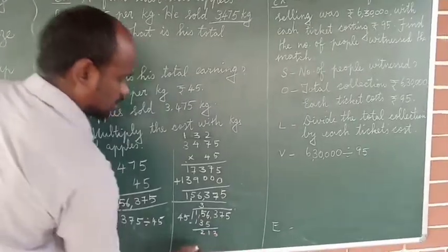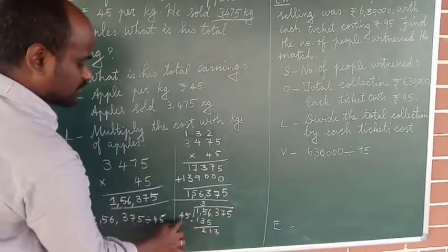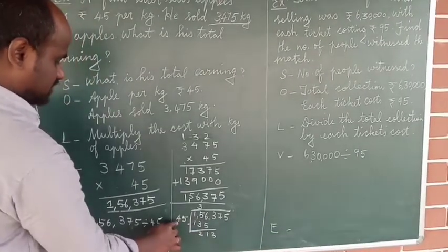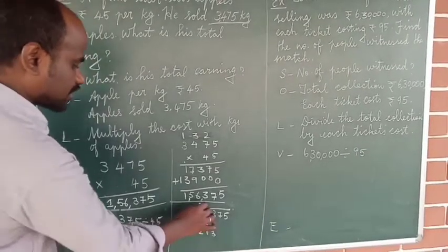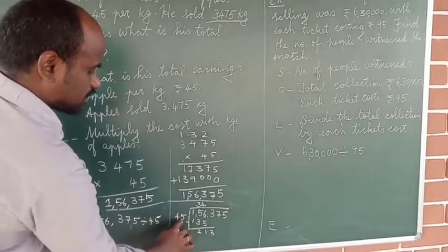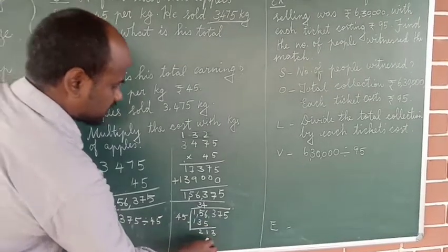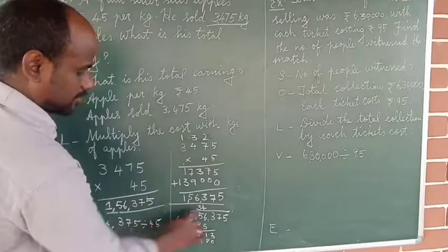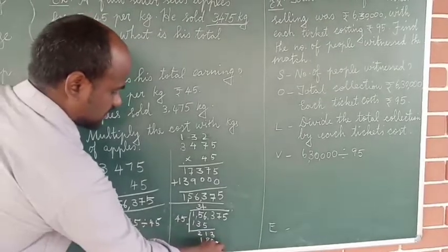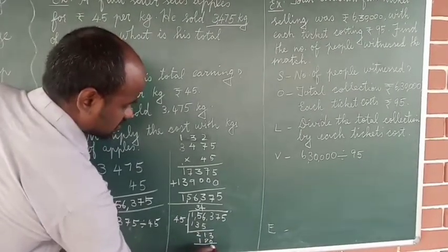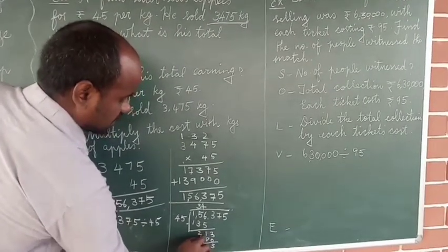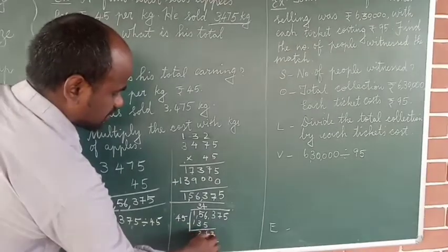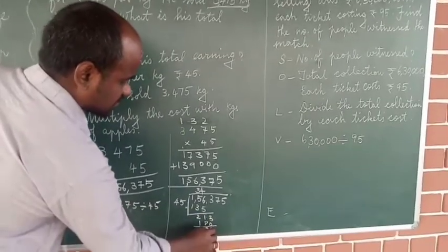In 213, how many 45s are there? There are 4. Four 45s are 180. Subtract: 213 minus 180. You can't subtract 8 from 1, so borrow — it becomes 11 minus 8 is 3, and then 0. Remainder is 33.